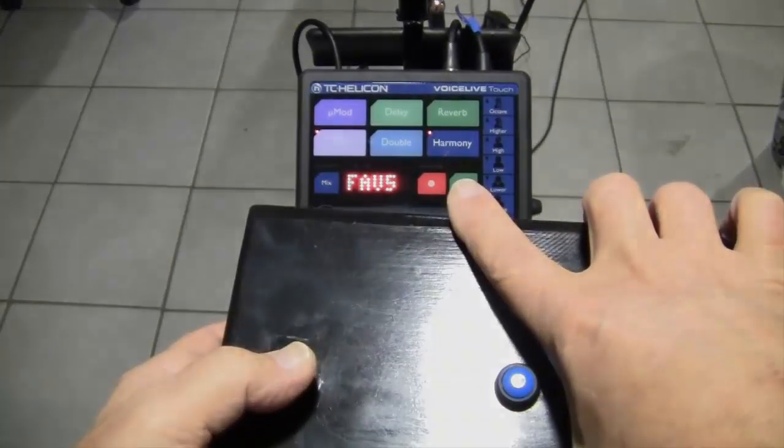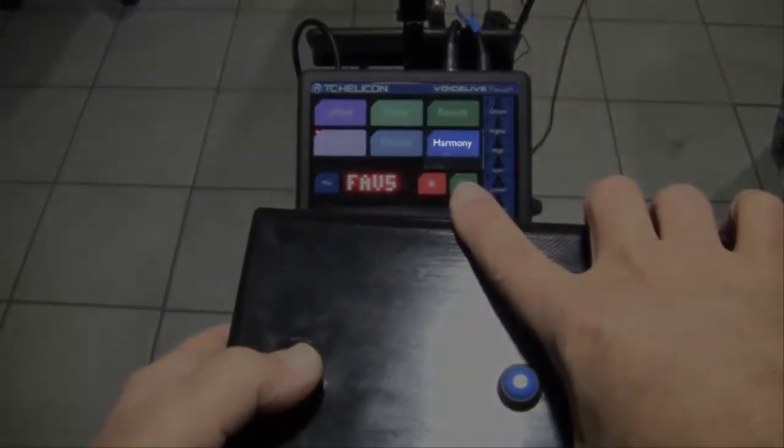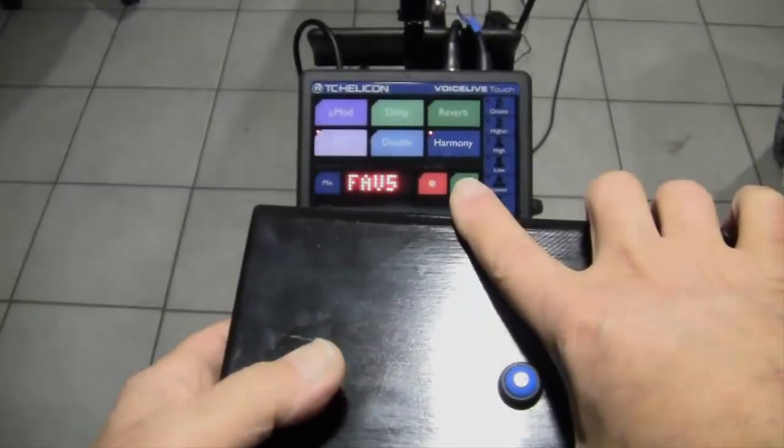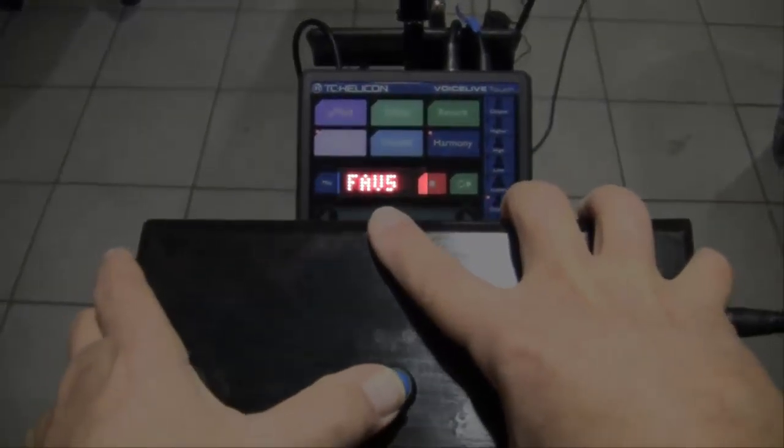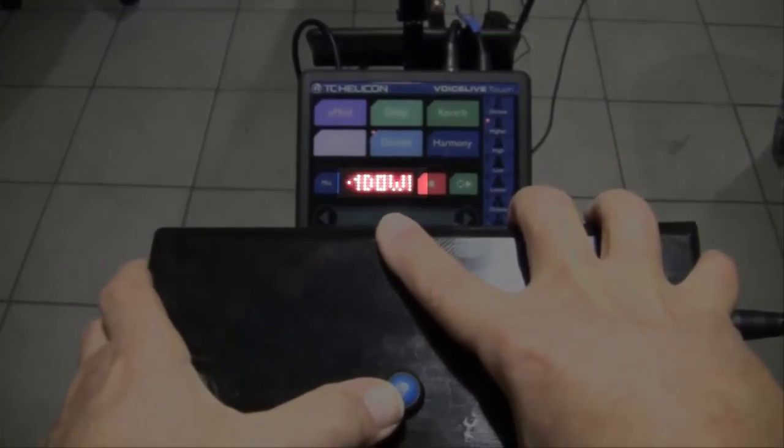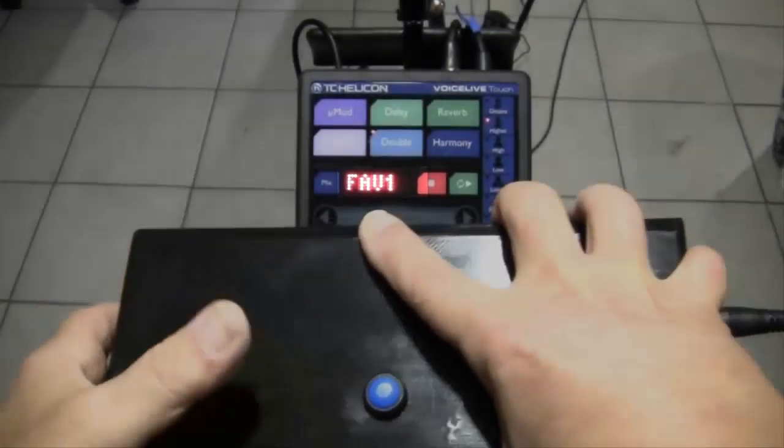Let's watch the harmony. So when we press the first switch, harmony goes on and off. Notice we're at favorite 5, so when we press the second switch, we loop over to favorite 1.